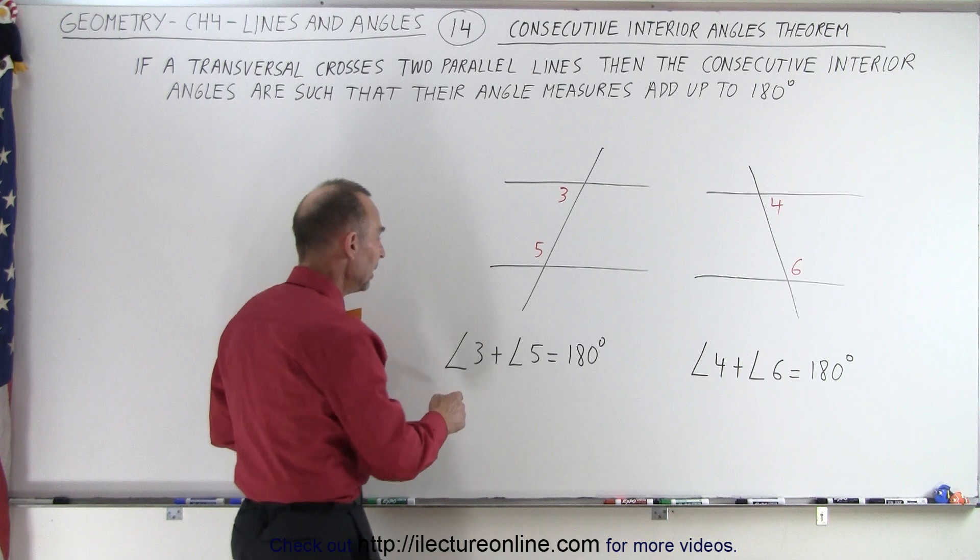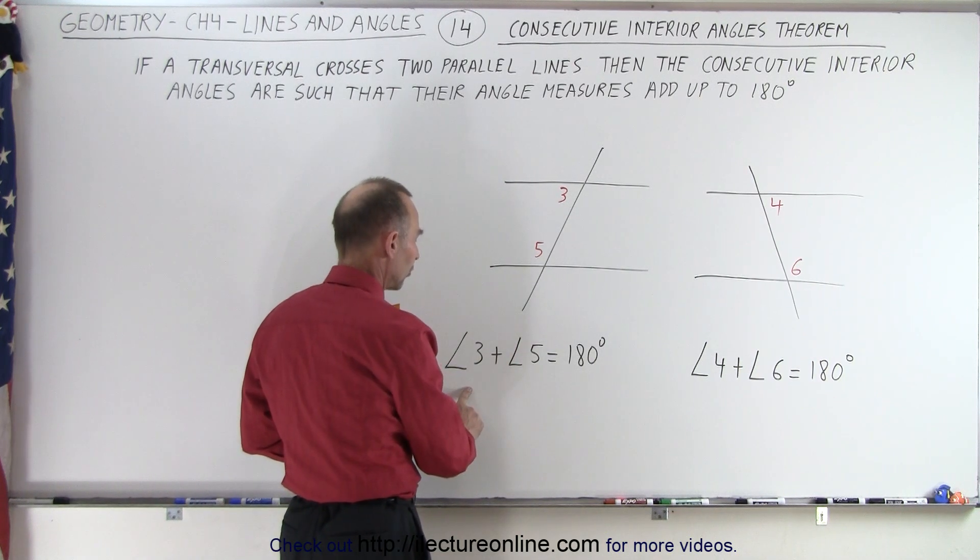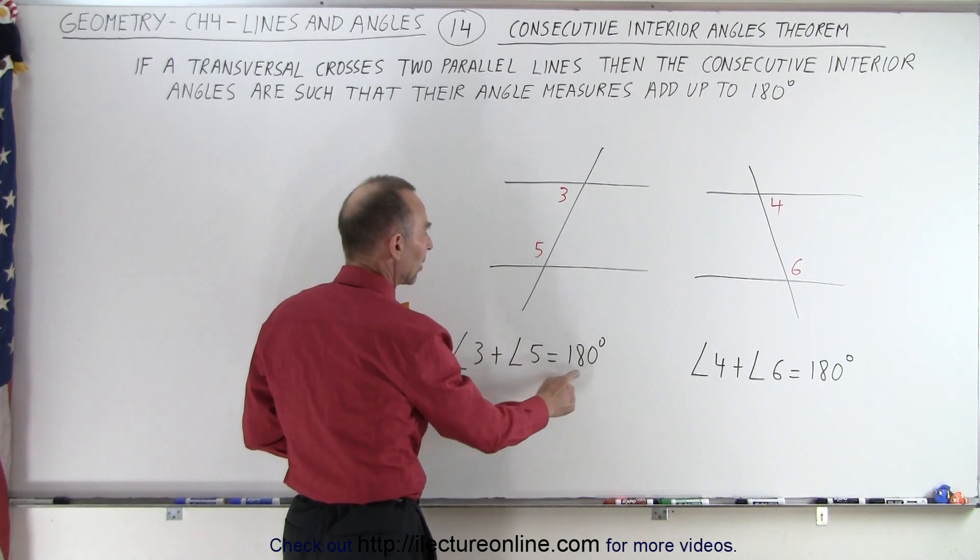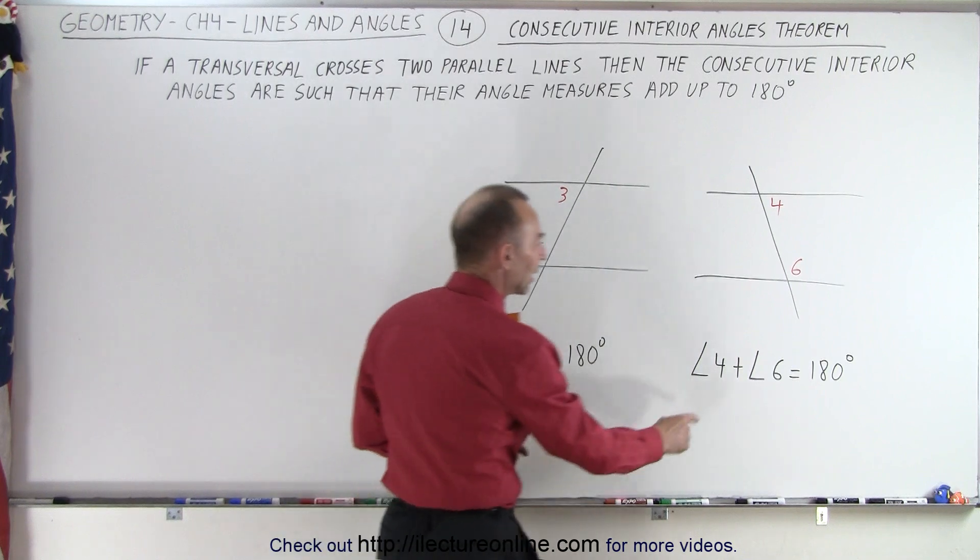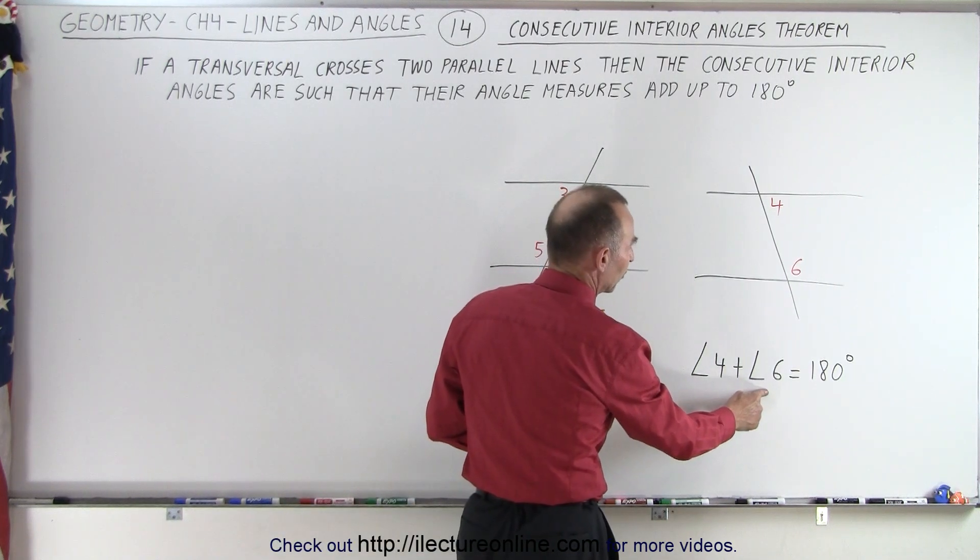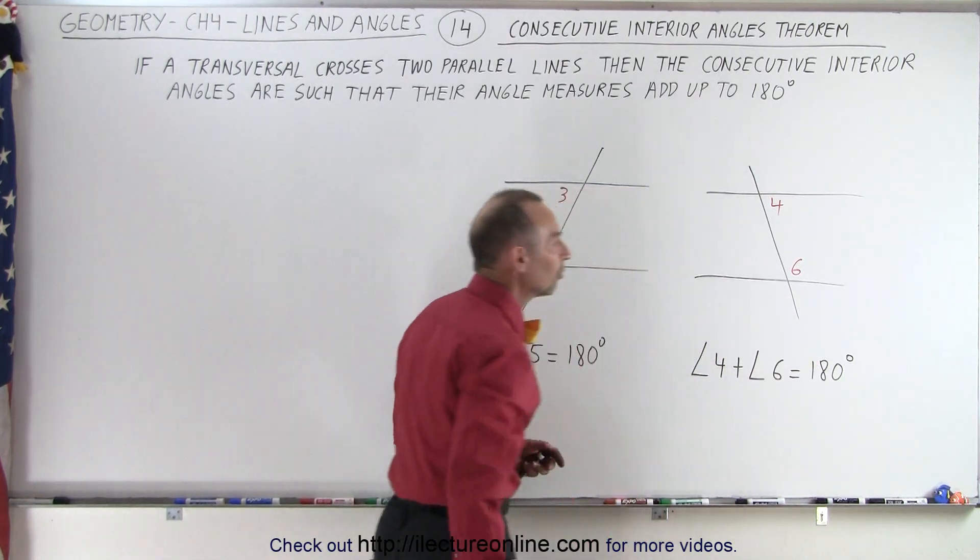Therefore, we can say that the angle measure of three plus the angle measure of five add up to 180 degrees, and the angle measure of four plus the angle measure of six add up to 180 degrees as well.